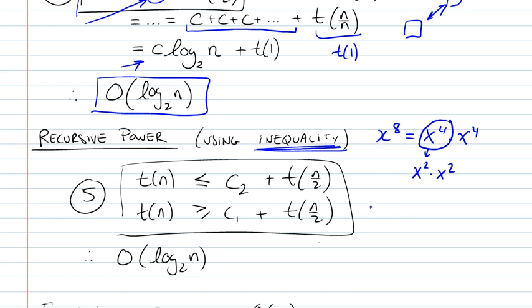Because if we have, for example, an odd number, x to the 9, then the multiplications involved will be x to the 4, x to the 4 times x. So there are actually two multiplications here. Whereas in the even case we had only one multiplication.